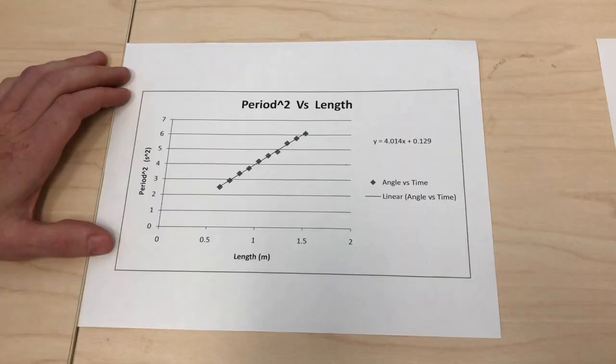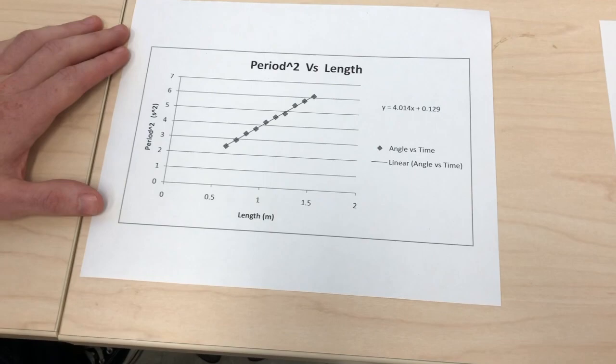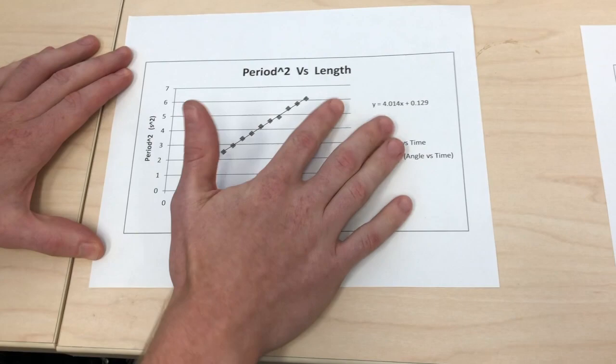All right, here's our graph of period squared versus length. You can tell it's a nice linear line.